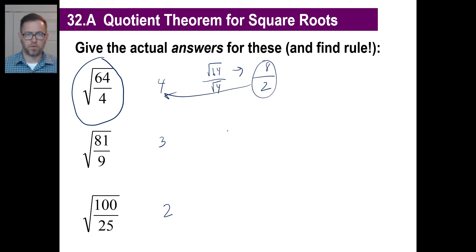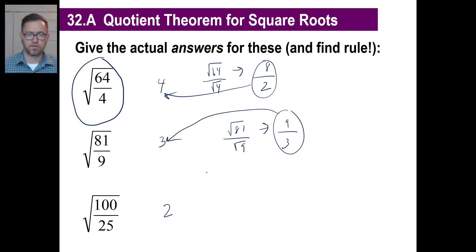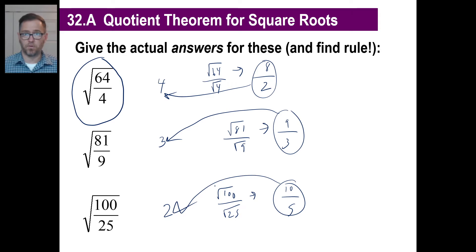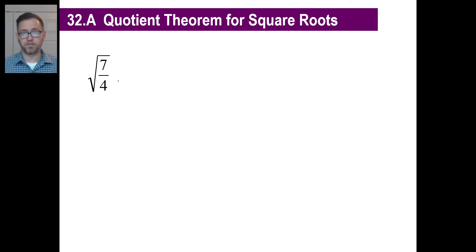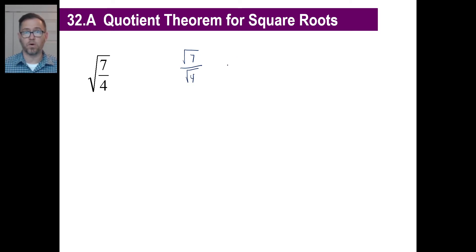How about this one? The square root of 81 over the square root of nine. The square root of 81 is nine. The square root of nine is three. Nine divided by three is three. The square root of 100 is going to be 10. The square root of 25 is five. 10 divided by five is two. So that gives us the rule. Anytime we see something like this, we can bust it up into two pieces. We can say this is the square root of seven over the square root of four. And this isn't just some theory — it works every single time.